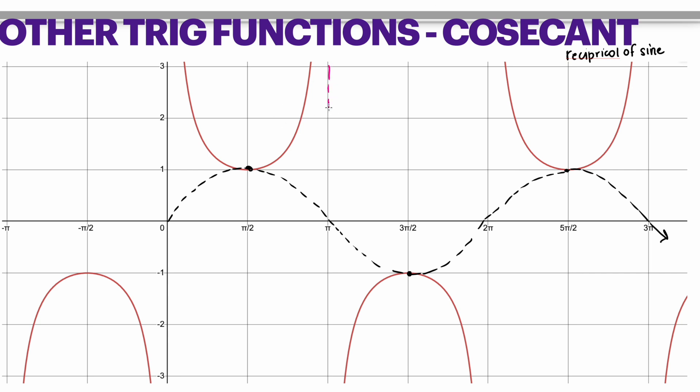Again, you will have the exact same instance happen. Wherever sine hits 0, that means cosecant is going to be 1 over 0, which again is going to be undefined. And so in that case, that is why you would have asymptotes everywhere the sine function is going to be 0.